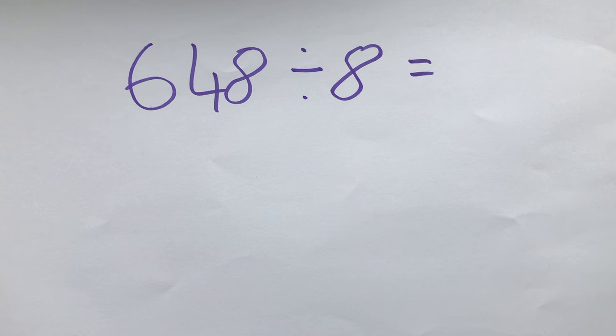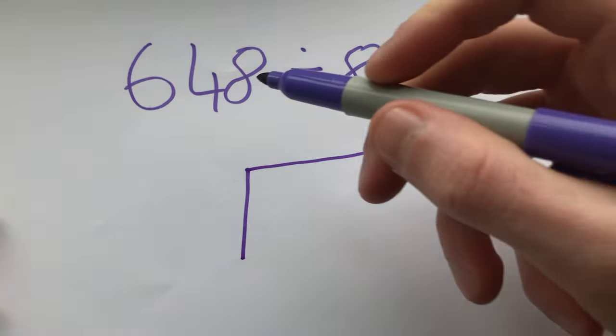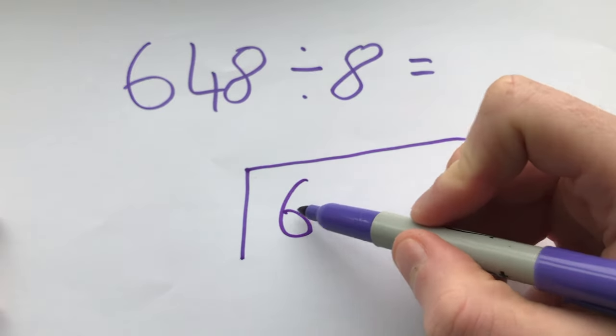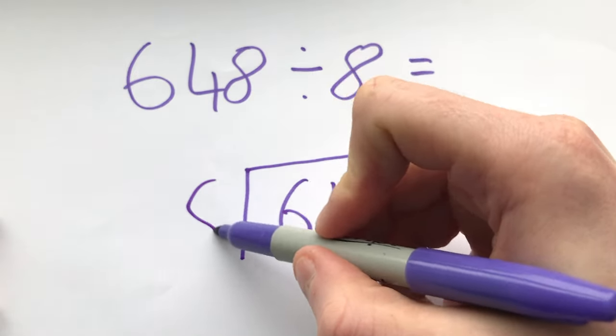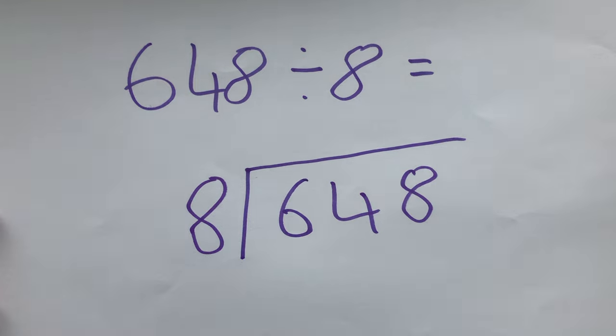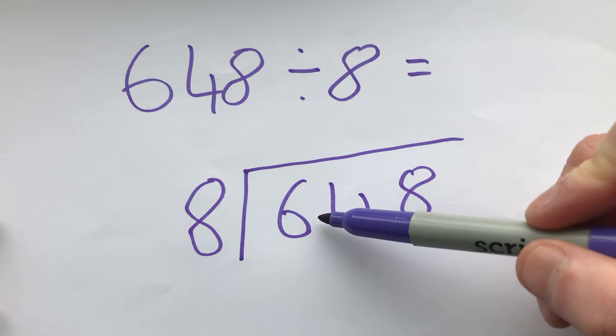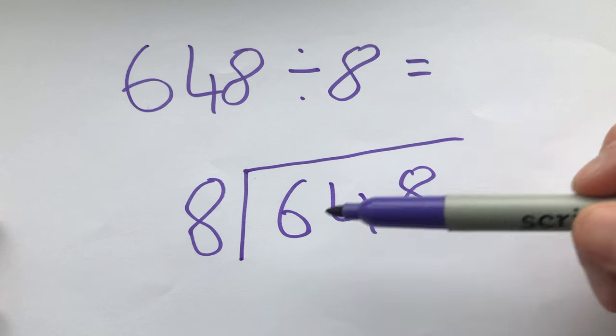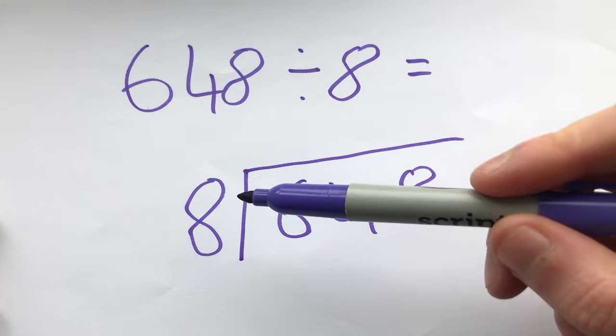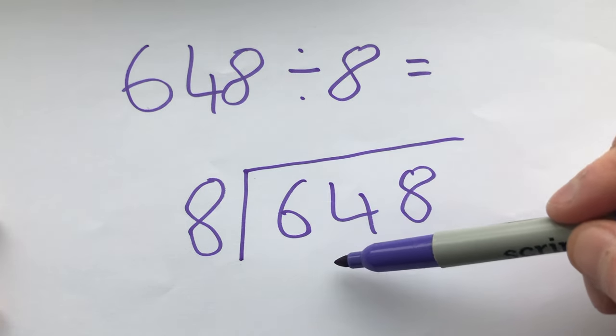For my second example we are going to be doing a slightly trickier one. So again we draw the bus stop, the number that we are dividing goes inside and the number that we are dividing by goes outside. So again this time we go across and we say how many threes go into 6? Well this time the answer is 0 because 8 can't fit into 6. So what we do in this case is we look again and say how many threes go into, and we look across this number here, so this is now our number 64.